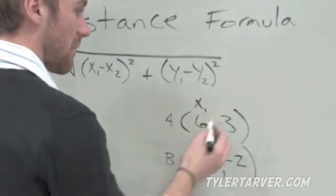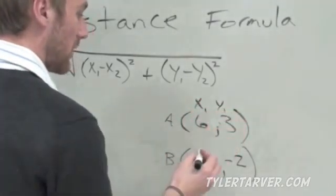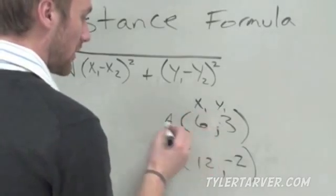First step is we label our stuff. That makes it so much easier to work our problem. We've got our x1 and our y1. This is our 1 and this will be our 2. Then we've got our x2 and our y2. Write that down and label it. Pause it if you can't go this fast.